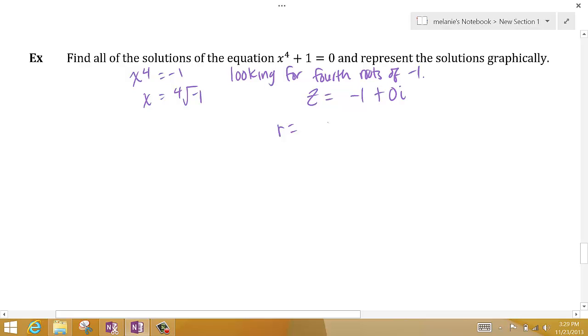The modulus r is a squared plus b squared all under a root, which looks like 1. And to find the argument, I do tangent theta is b over a, so that's 0 over negative 1. And I know that that is sine over cosine. And I know sine is 0 and cosine is negative 1 when theta is pi.